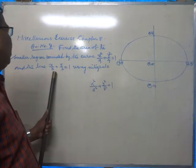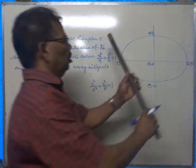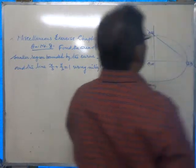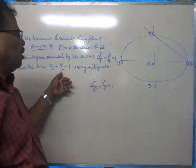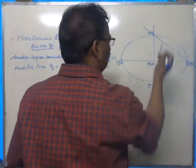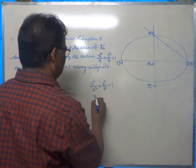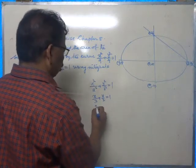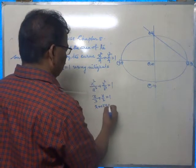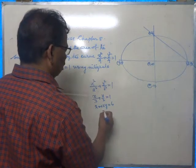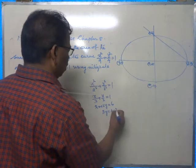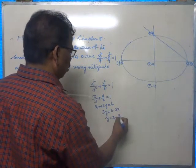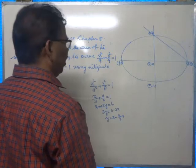Now the line x/3 + y/2 = 1 has x-intercept 3 and y-intercept 2. Multiplying by 6 gives 2x + 3y = 6, so 3y = 6 - 2x, and therefore y = 2 - (2/3)x.